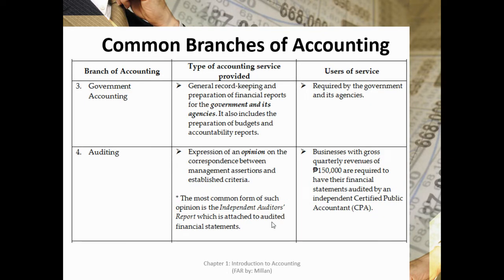Government accounting refers to accounting for the government and its instrumentalities, focusing attention on the custody of public funds, the purposes to which those funds are committed, and the responsibility and accountability of the individuals entrusted with those funds. In auditing, it involves the inspection of an entity's financial statements or business processes to ascertain their correspondence with established criteria — auditors express an opinion on whether the company complies. Businesses with gross quarterly revenues of 150,000 are required to have their financial statements audited by an independent certified public accountant.